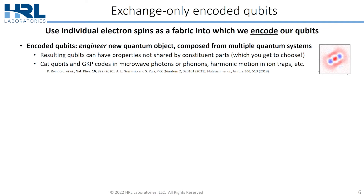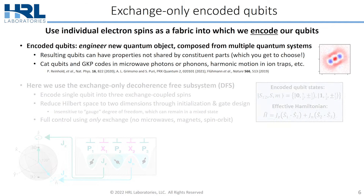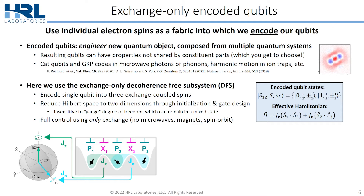The system we measure at HRL is not an individual spin — we use an encoded qubit, using electron spins as a fabric in which to encode qubits. An encoded qubit is a new quantum object composed of multiple individual quantum systems, letting you engineer properties not shared by the constituent parts. Examples include cat qubits and GKP codes in microwave photons or phonons, and recent demonstrations using harmonic motion in ion traps. Here we use the exchange-only decoherence-free subsystem (DFS), encoding information into three individual electron spins. The Hilbert space is reduced to two dimensions through initialization and gate design, ensuring insensitivity to the gauge degree of freedom, which can remain in a mixed state.